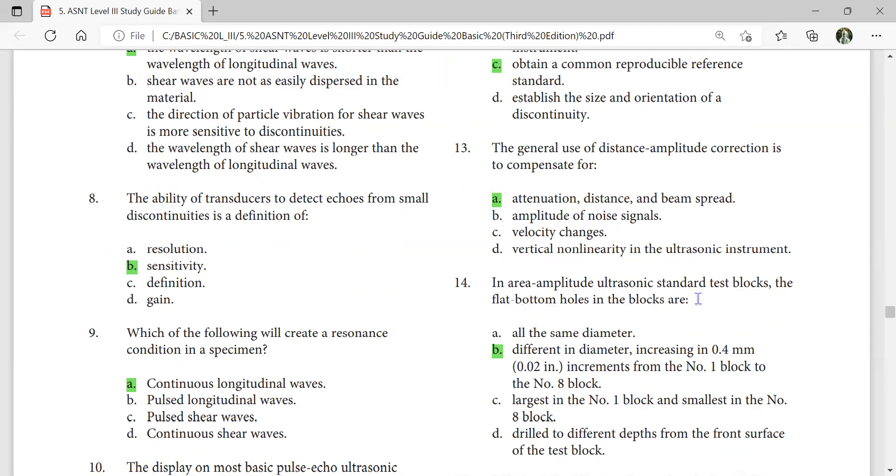In area amplitude ultrasonic standard test blocks, the flat bottom holes in the blocks have different diameters. The area is different, increasing by 0.4 mm diameter increments from the number 1 block to number 8 block. So the area of the hole is increasing.